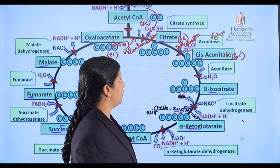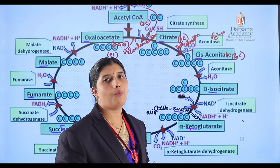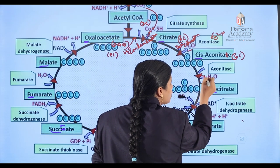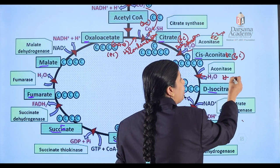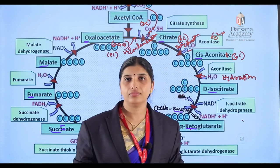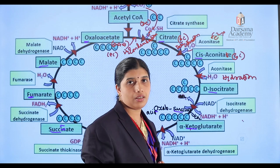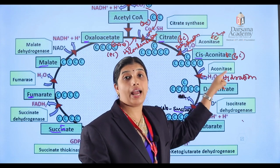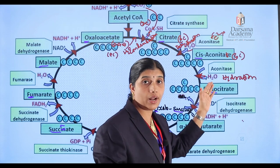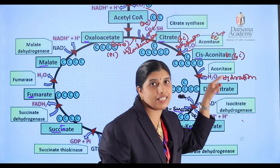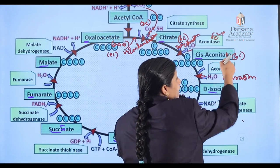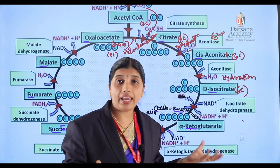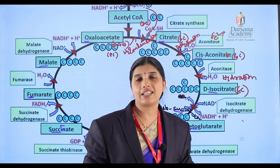The third step is hydration. Cis-aconitic acid needs water added to it — this process is called hydration, or addition of water. Again, the enzyme aconitase helps in this process, and it forms isocitric acid. The carbon number of isocitric acid is also six, because no decarboxylation takes place.